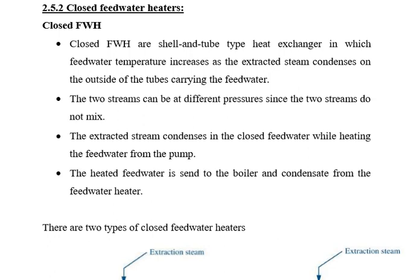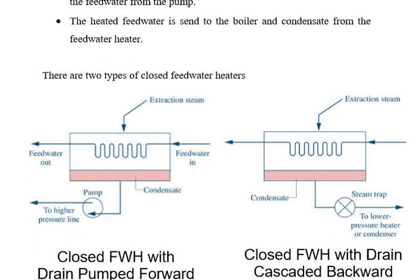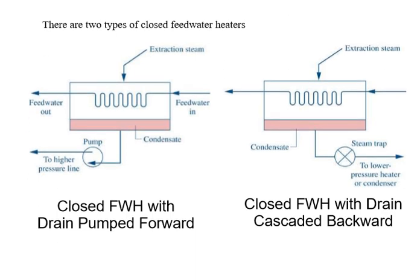First draw the T-H diagram, identify the saturation curve and pressure lines, and locate states 1→2→3→4→5→6→1. States 3→4 represent the turbine section, 4→5 the reheating section, and 5→6 the low-pressure turbine and condenser section. The system consists of a pump, boiler, high-pressure turbine, reheater, low-pressure turbine, and condenser.